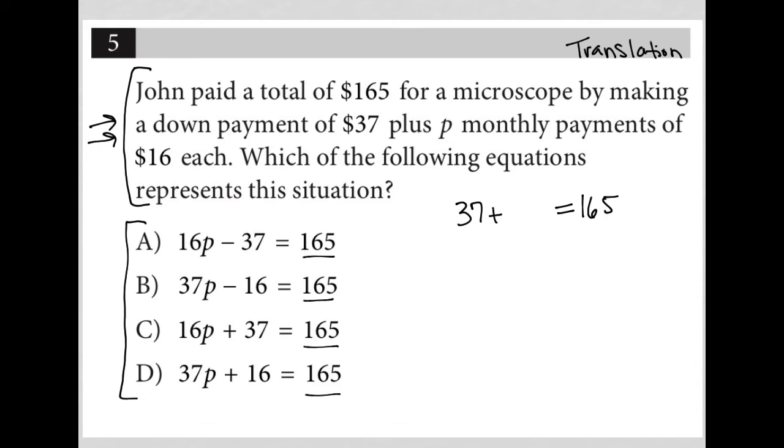And we know he's making monthly payments, P monthly payments of $16 each. So we know that every month he's paying $16, which means the total amount paid for those P months must be 16 times P. So there's our equation.